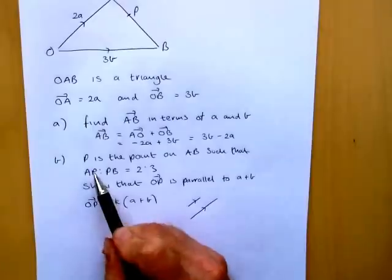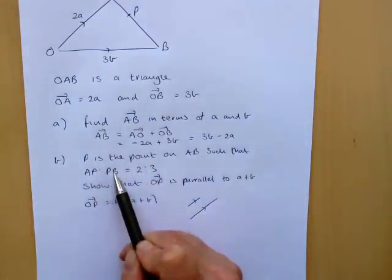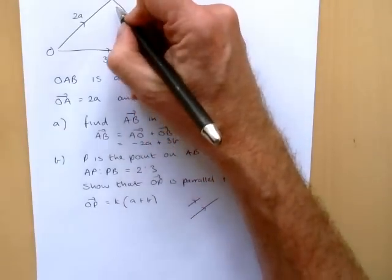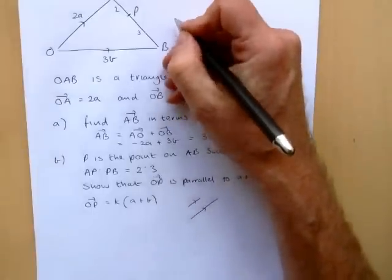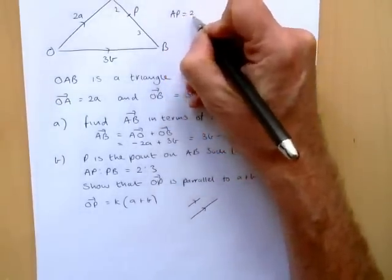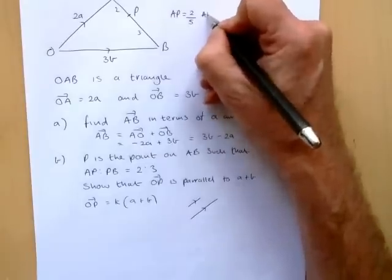Now the second bit of information, well the bit of information that we're given to prove this is that AP to PB is in the ratio 2 to 3. So if you put 2 there and 3 there,